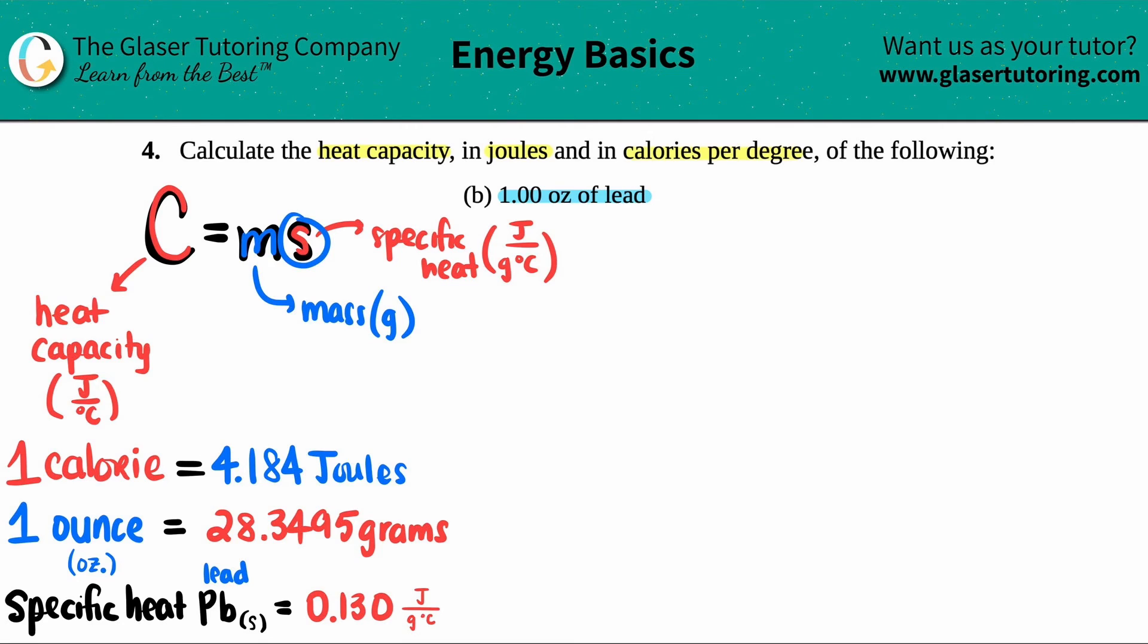If we want to find the C value, I should know the mass and the specific heat. C equals the mass—they told us one ounce of lead. I need to convert that ounce into grams. I'm only allowed to use grams in this formula. One ounce equals 28.3495 grams. So instead of putting one, I'm gonna put in 28.3495. I don't put in the units because that gets a little crazy. I just memorize what unit has to be there and put the numbers in.